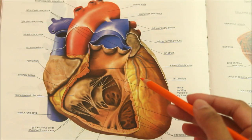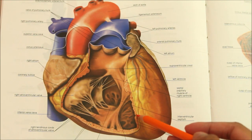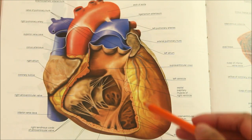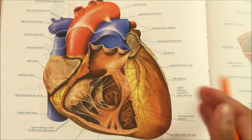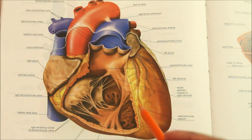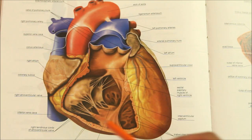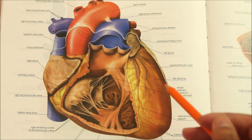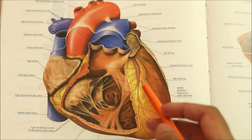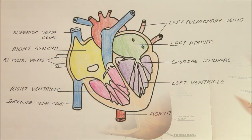The direction of blood flow from atria to ventricles is downwards, forwards and to the left of the median plane. The heart measures about 12 by 9 centimeters and weighs about 300 grams in males and 250 grams in females.